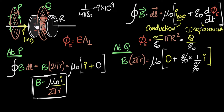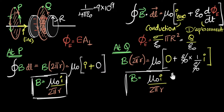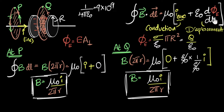Therefore, the magnetic field at Q is also B = μ₀I / (2πr) — exactly the same as at P. If we had used only Ampere's law and neglected the displacement current term, we would have gotten zero. But Maxwell rightly recognized it's not just conduction current that matters — changing electric flux also induces a magnetic field. It is the displacement current that produces the magnetic field between the capacitor plates.